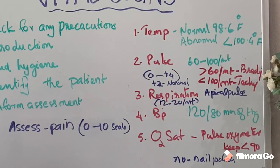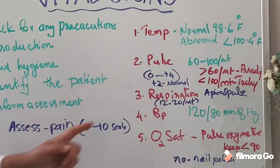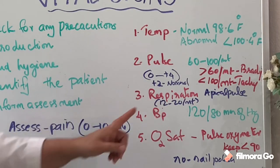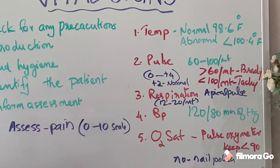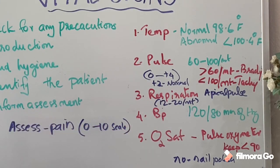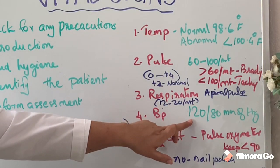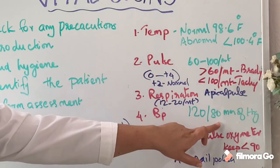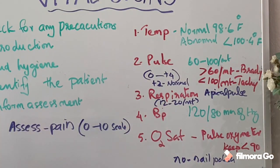The next component is respiration — normal for adults is 12 to 20 breaths per minute; observe chest rise and fall. Then check blood pressure. Normal blood pressure for an adult is 120 systolic over 80 diastolic, expressed as 120/80 mmHg.